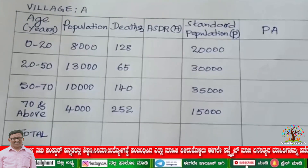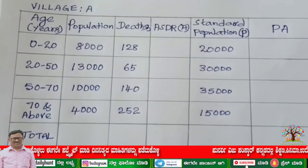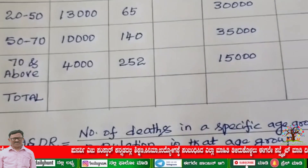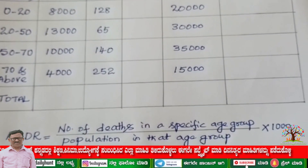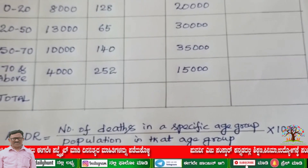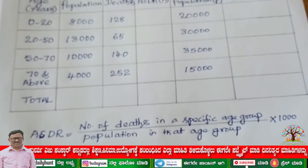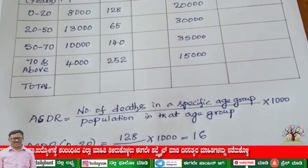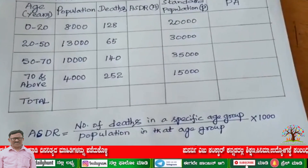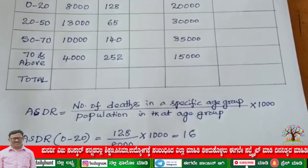Let us calculate ASDR. What is ASDR? ASDR is age specific death rate. For each and every age group you have to calculate ASDR. Let us write the formula: ASDR is equal to number of deaths in a specific age group divided by population in that age group, into 1000. For example, ASDR for age group 0 to 20 is equal to 128 divided by 8000 into 1000, which gives us 16.